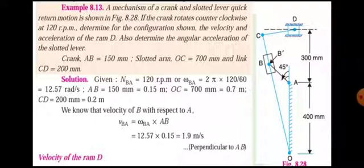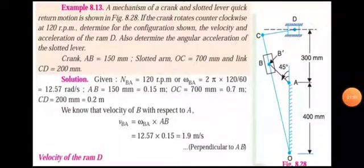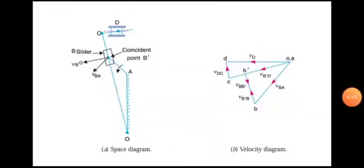First, find the linear velocity: V_BA equals omega into AB equals 12.57 into 0.15, so the final value is 1.9 meters per second. Once we know the velocity, we can draw the velocity diagram. First, drop the space diagram based on the given data.